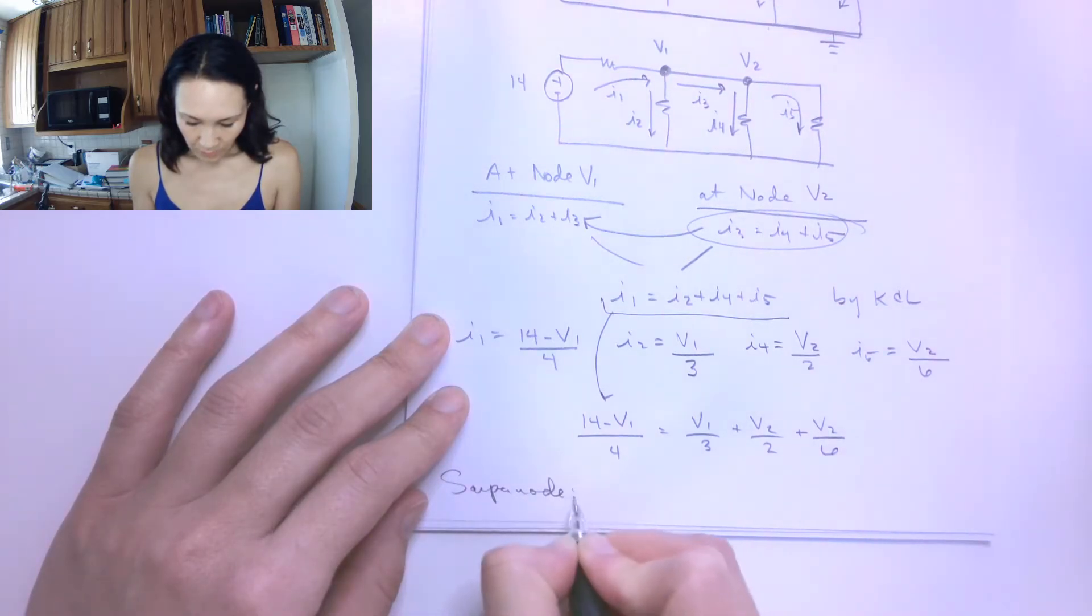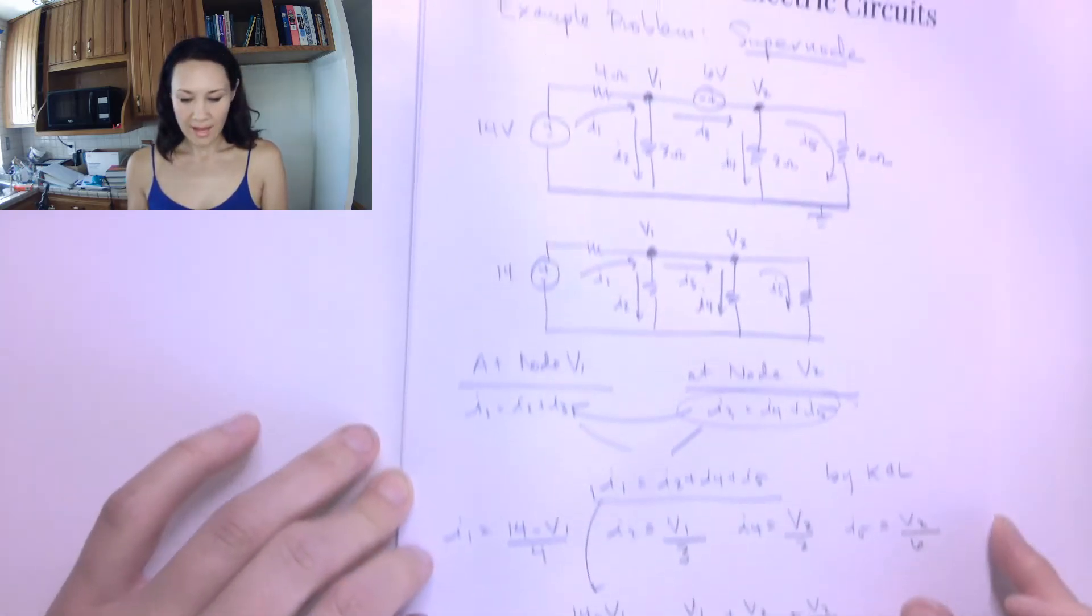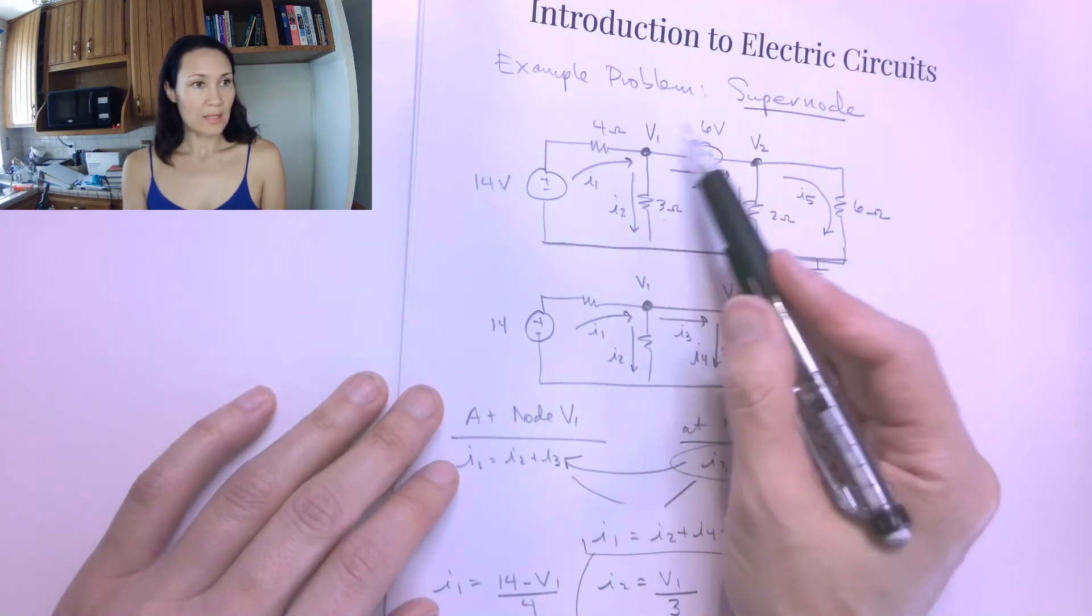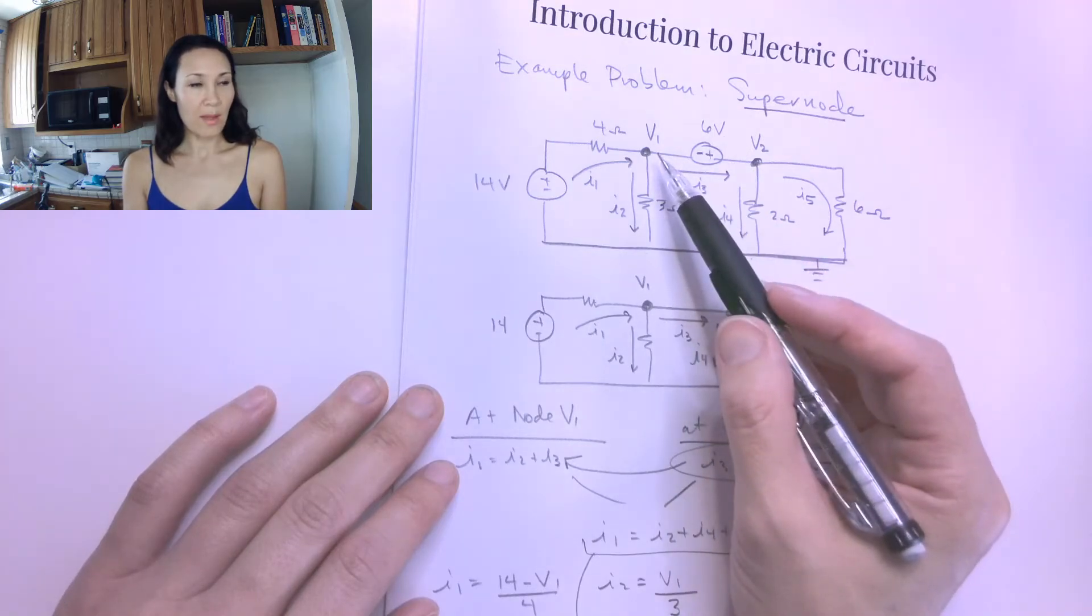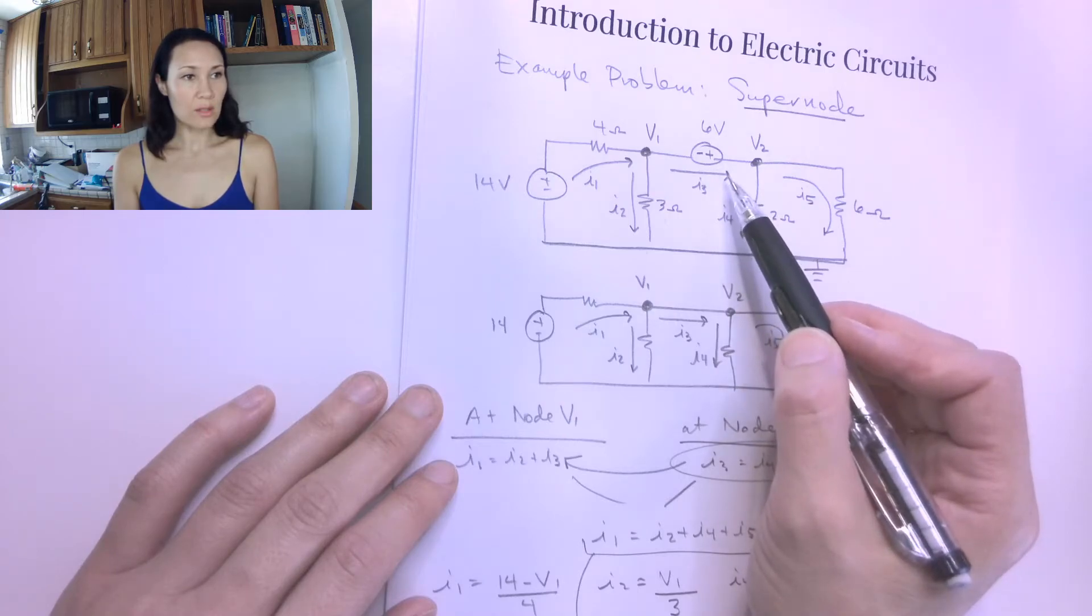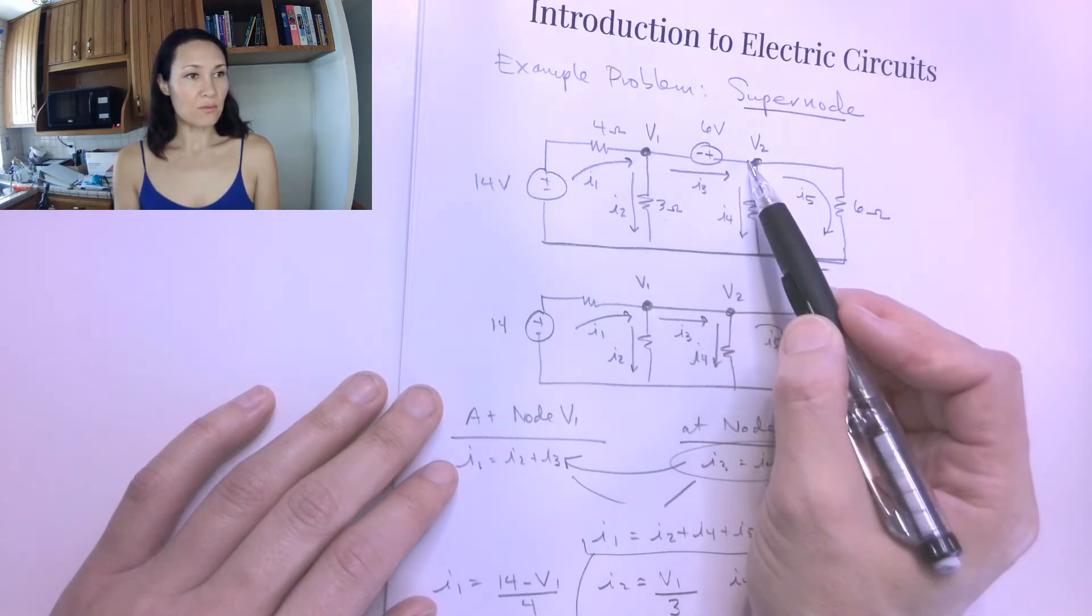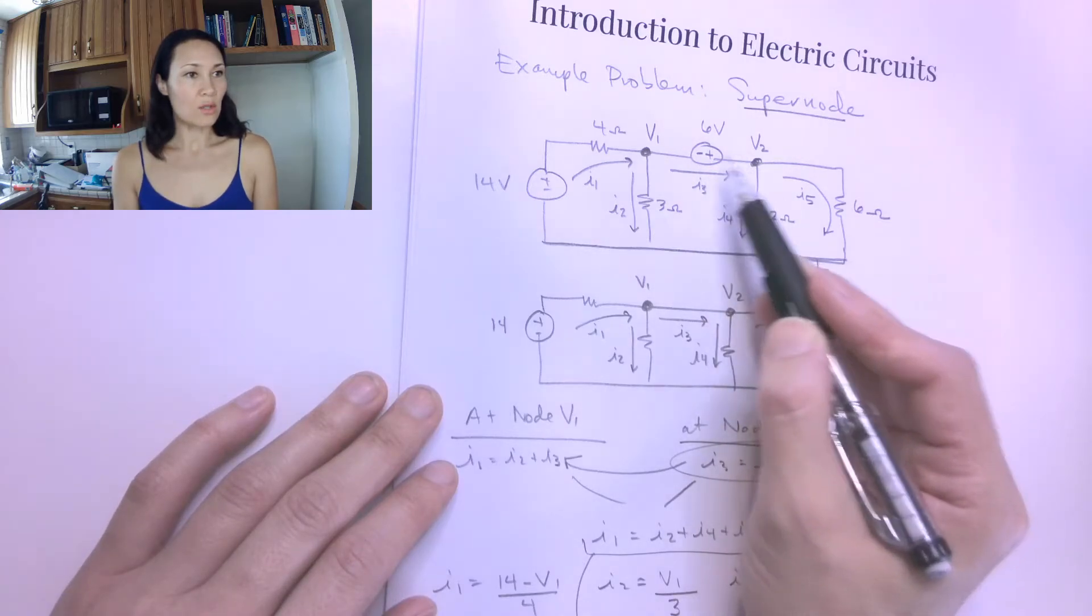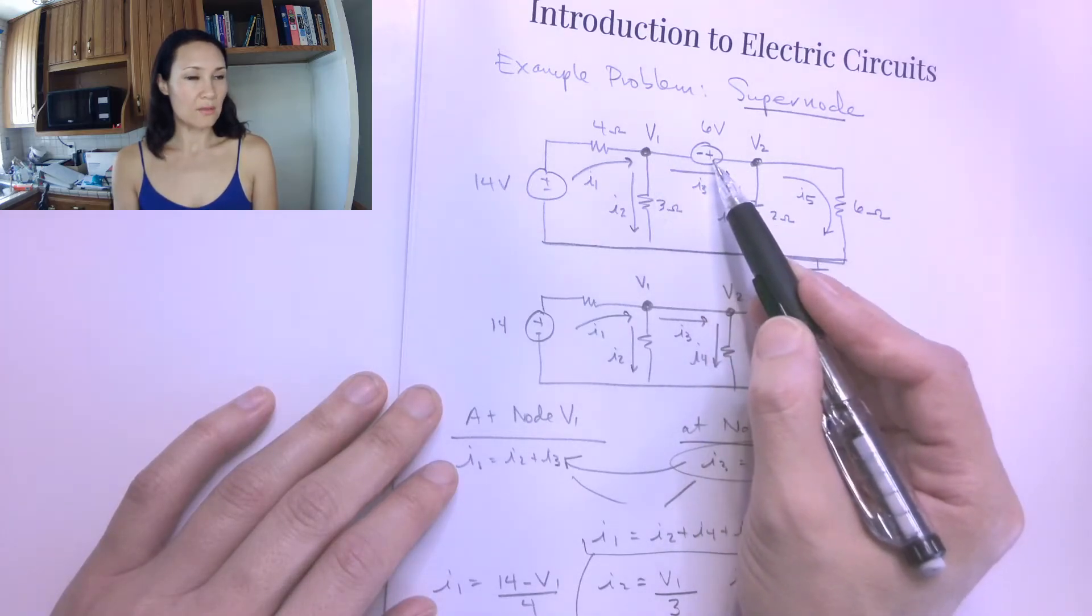We know that V1 minus V2 is equal to this voltage here. So by the passive sign convention, if I went consistent with the direction of the current that I wrote here, V1 minus V2 would be a negative 6 since it's coming in the negative terminal. I can also say that V2 minus V1 is equal to positive 6.